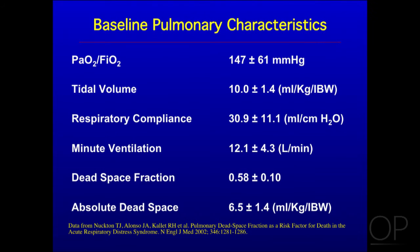Here are the baseline characteristics. PF ratio was 147 — pretty severe. Tidal volume, as I mentioned, 10 mL per kilogram ideal body weight. Respiratory compliance was reduced. Minute ventilation, just as we anticipated, was twice normal at 12.1 liters. Dead space fraction overall was 0.58 — quite elevated, given that a normal ventilated patient without lung disease has a dead space of around 0.35 to 0.38.